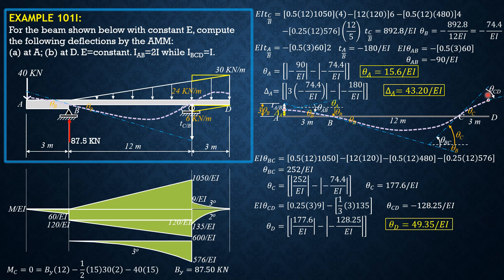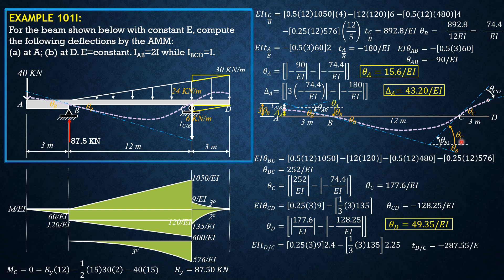If we draw a horizontal from the tangent at C, that angle is θ_C. Therefore θ_D is positive: absolute value of θ_C minus absolute value of θ_CD. So θ_D equals 177.6 over EI minus the absolute value of negative 128.25 over EI, which is 177.6 minus 128.25, giving θ_D equals positive 49.35 over EI.